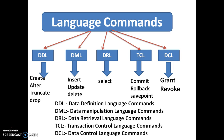TCL stands for Transaction Control Language commands, which are used to save transactions. A transaction is a small unit of work. There are three types: COMMIT, which saves changes permanently; ROLLBACK, which undoes changes; and SAVEPOINT, which saves a portion of a transaction and allows rolling back to that portion.